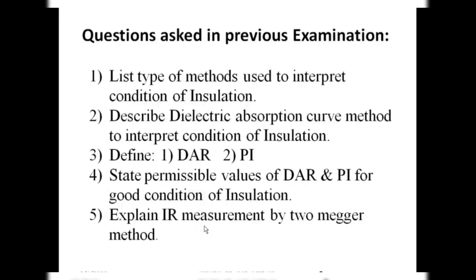A fifth question sometimes asked is on the IR measurement by two-megger method. To answer, first draw appropriate diagrams, then explain the procedure to take readings. In the third paragraph draw the graph, and in the fourth paragraph interpret the insulation condition from it. Two key points to highlight: the spread of the graph, and the difference in readings for the same time duration between the two different meggers. This approach meets the model answer requirements for examination boards.